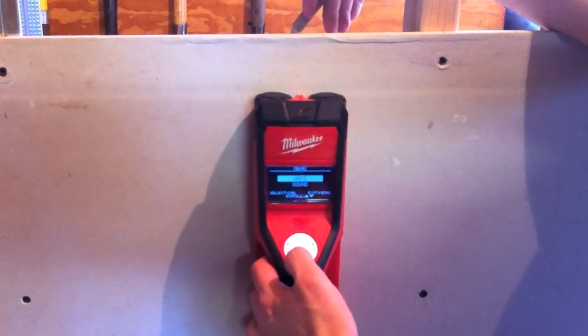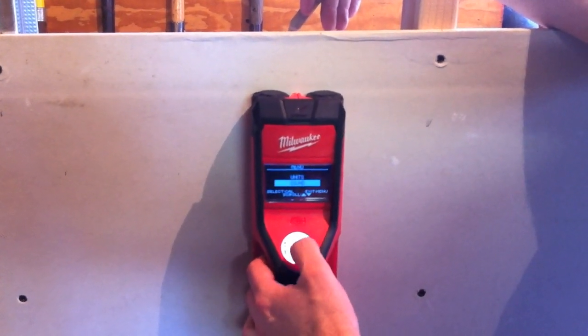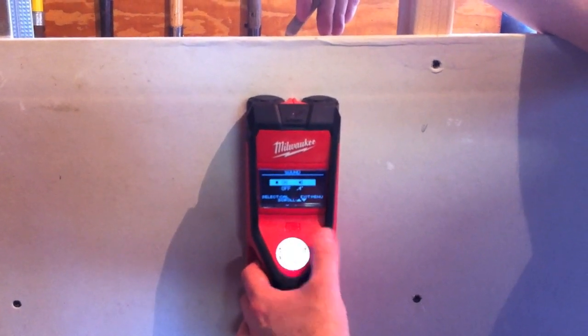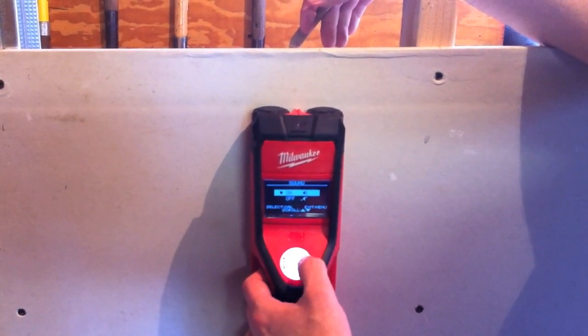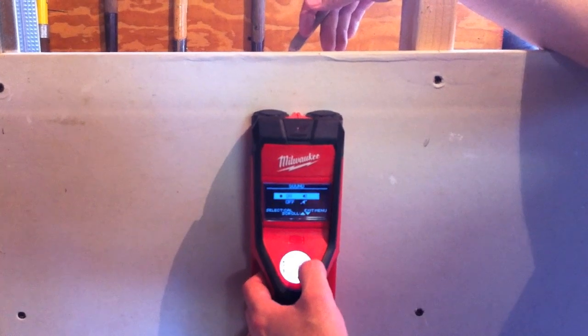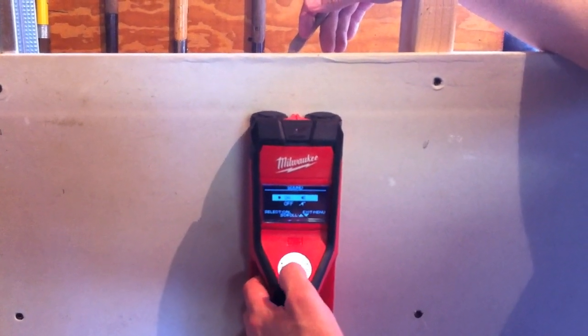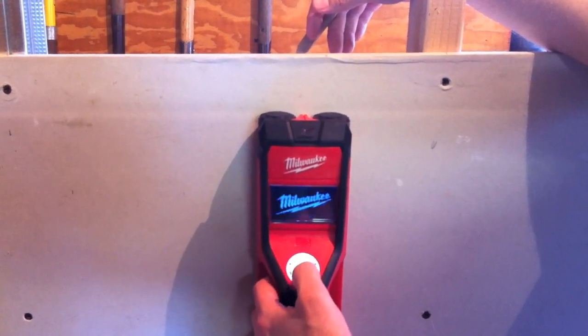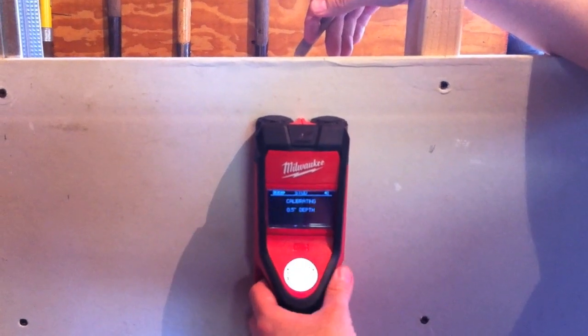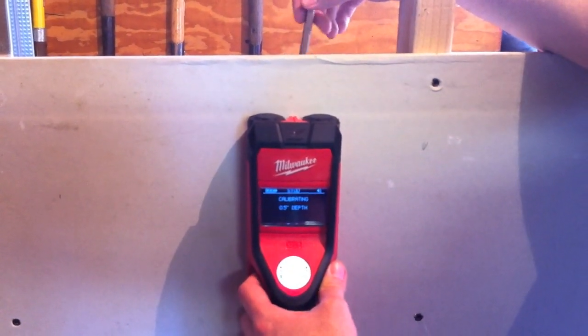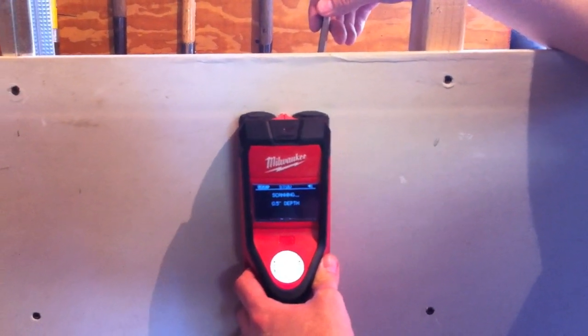If you go through the menu, you can change the units. You can also turn on the sound. So if the sound's on, sound's on. So what we're going to do is we're going to hit menu again. We're going to calibrate it. This time it will give you an audio signal of when it found a stud.